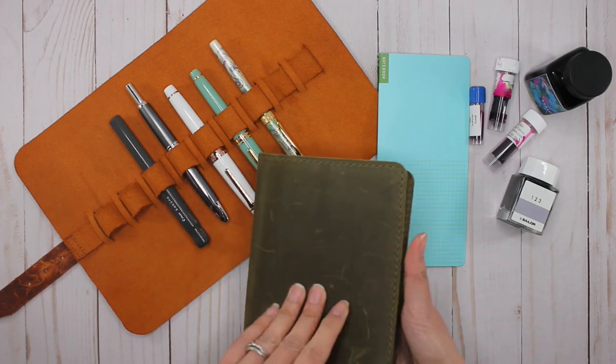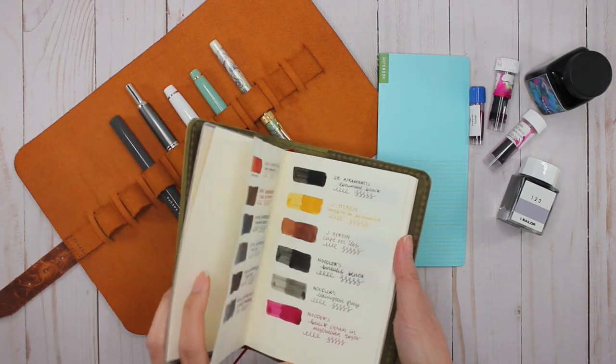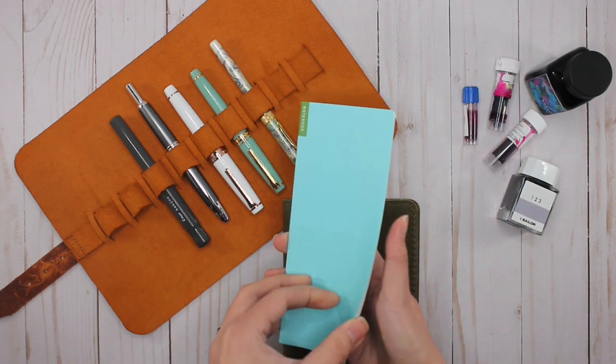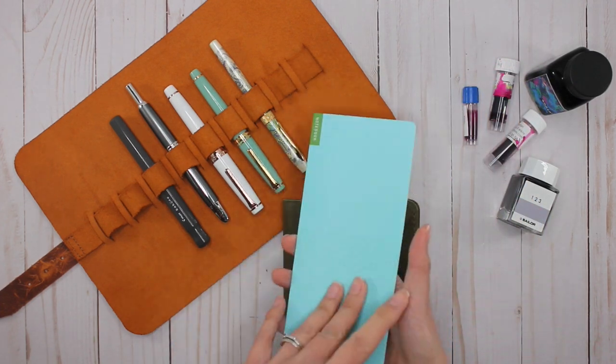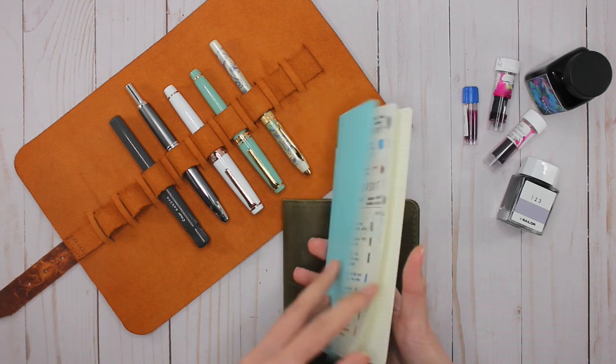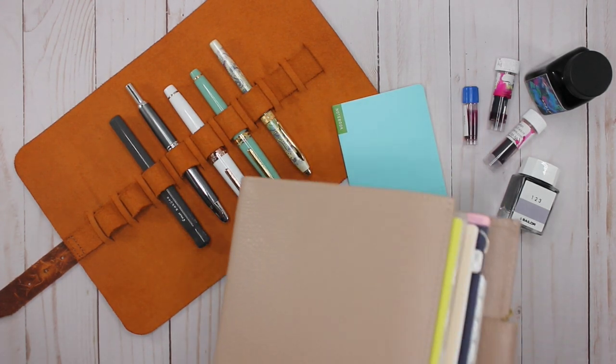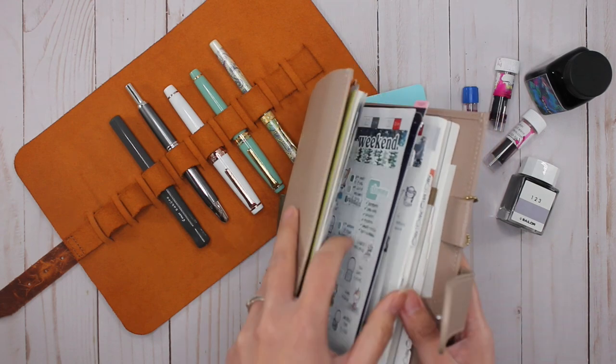There's actually three different places that I keep track of it. First I have it in my Midori A6, so it's got the Midori paper in here. The second place is actually in this week-size notebook that I got from Hobonichi, so it's got the Tomoe River paper in it.